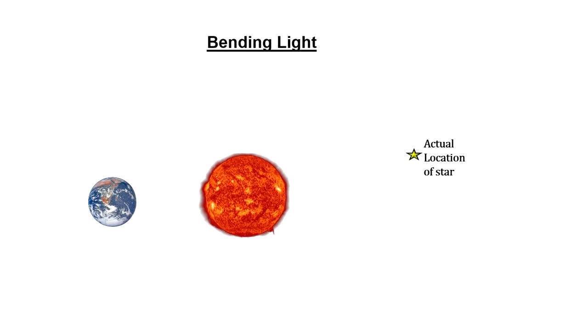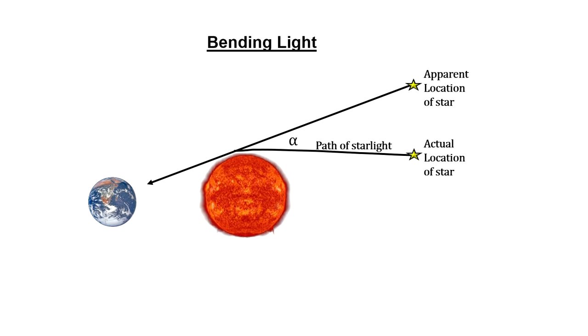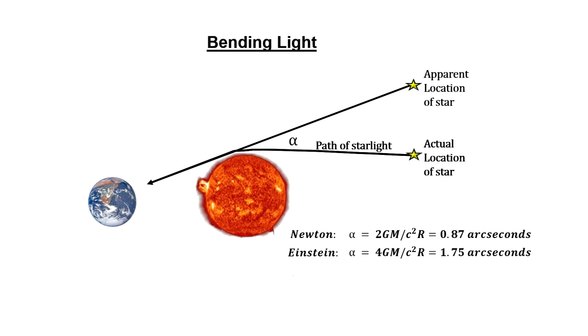When light comes close to the Sun, the Sun's gravity bends it inward. This makes the star look like it's further away from the Sun in the sky than it really is. Both Einstein's and Newton's gravitational theories predicted this, but the theories predicted different values for the amount light would bend.